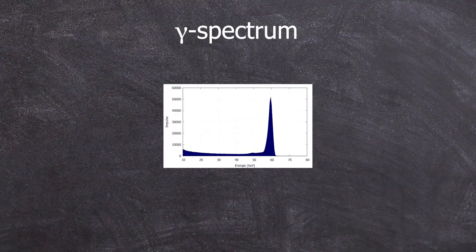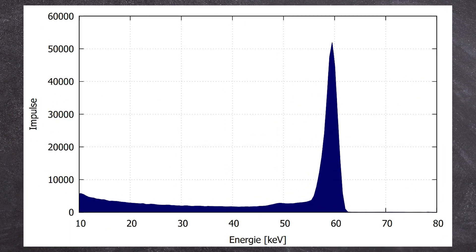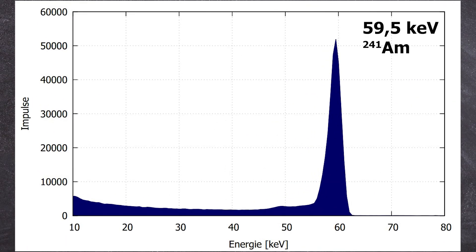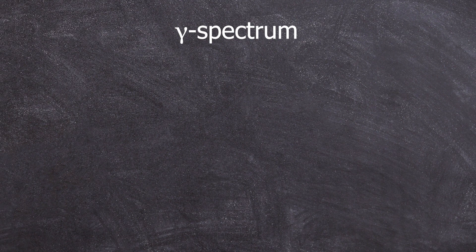I plugged it into the Geiger counter and you can clearly see the 60 keV americium-241 line. In a previous video I determined the efficiency, including the efficiency for americium.